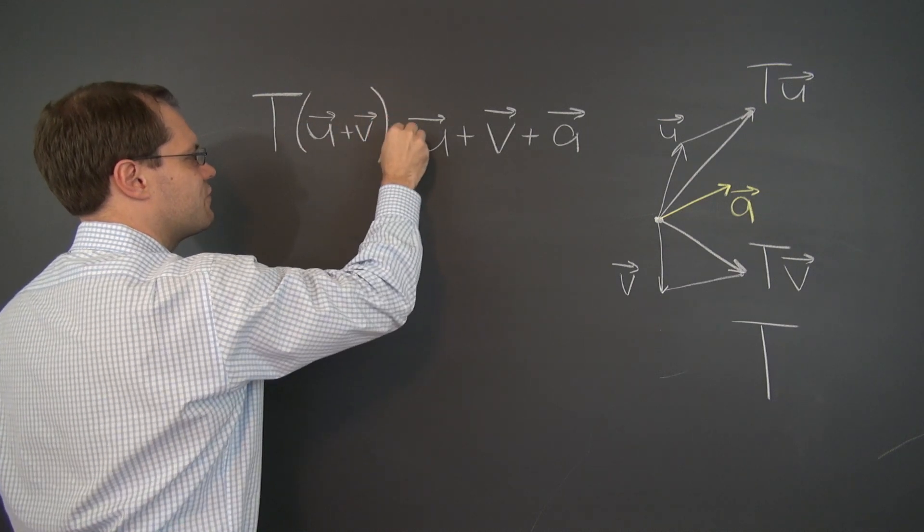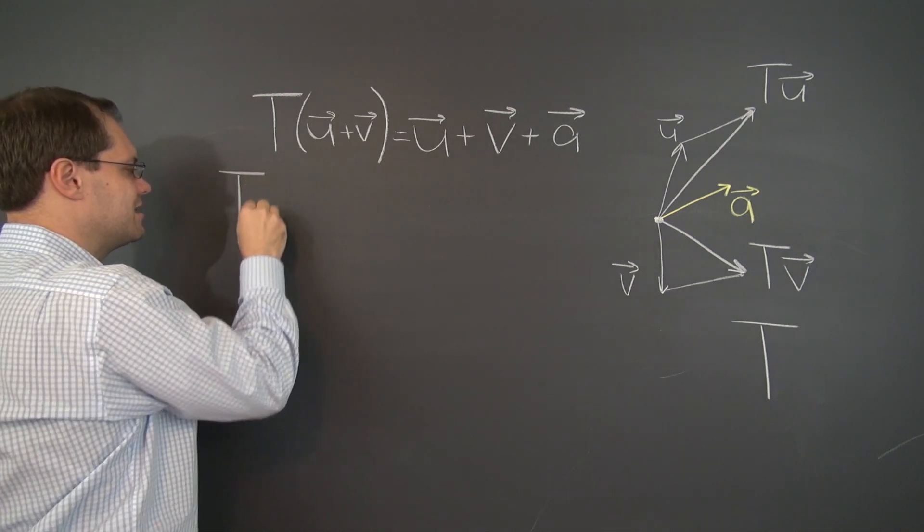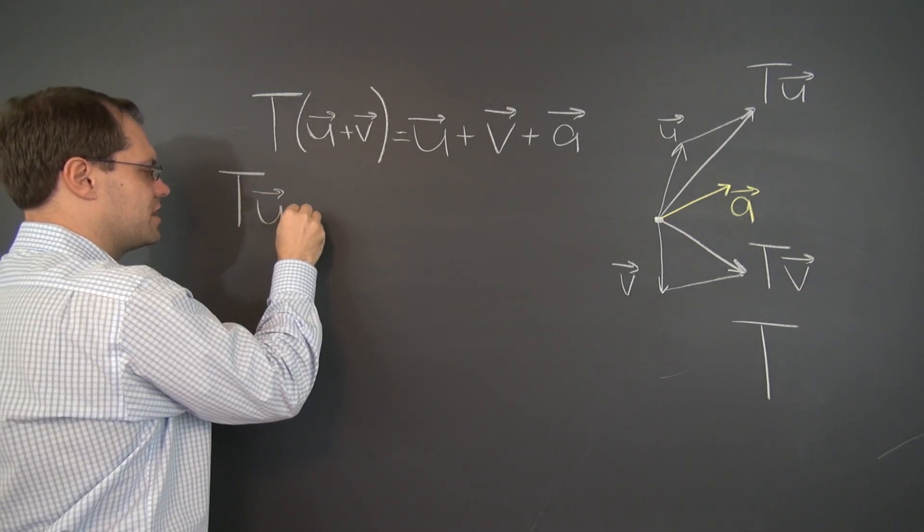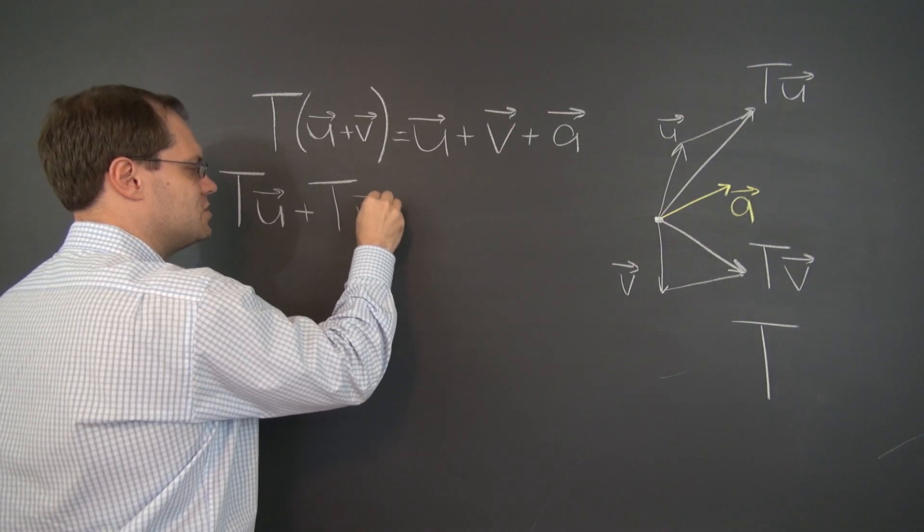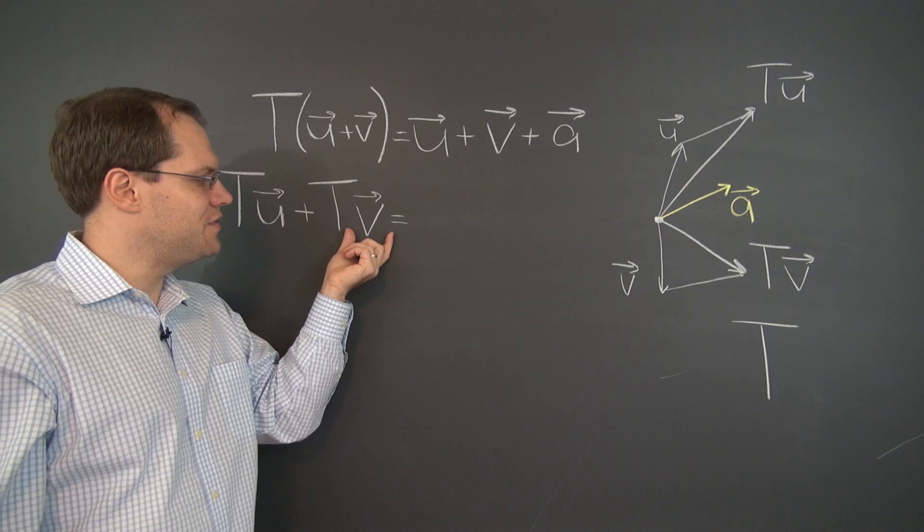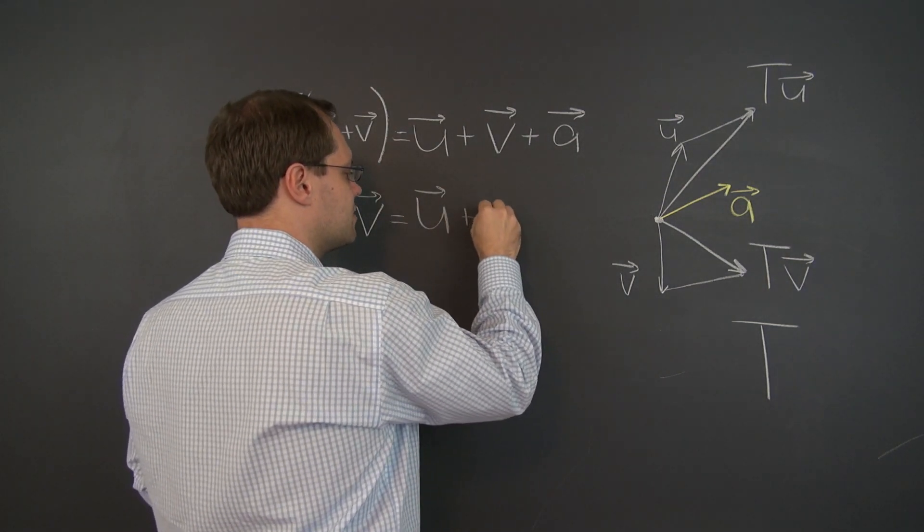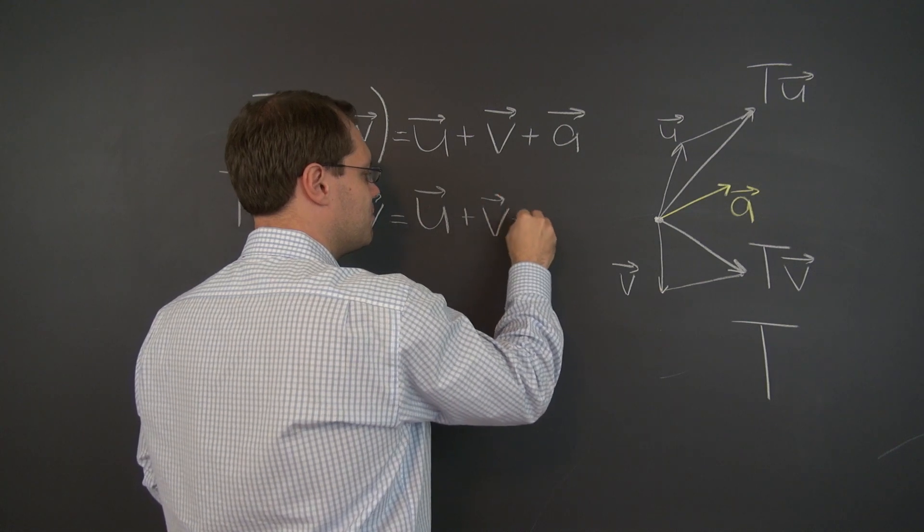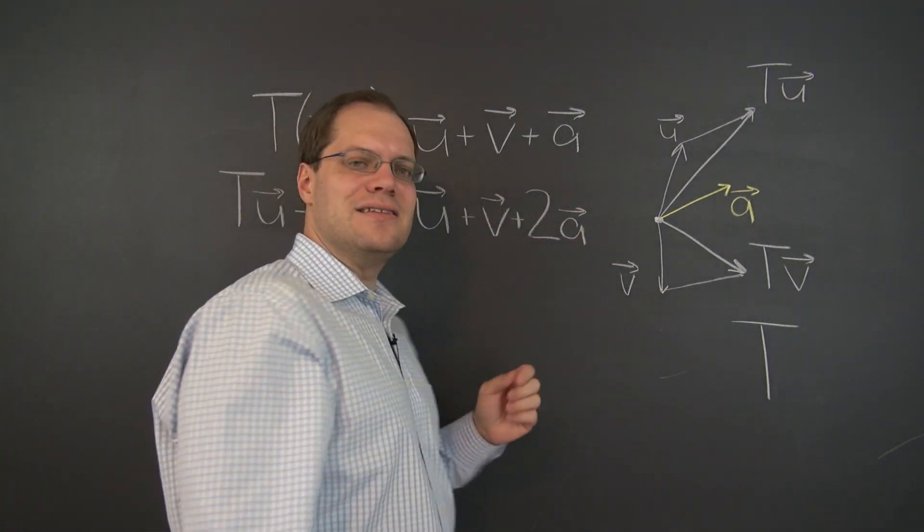What if we did it in the opposite order? What if we transformed each vector first and then added up their images? Well then you would have u plus a plus v plus a, which of course is u plus v plus 2a. And the result is not the same.